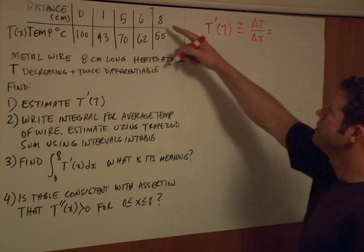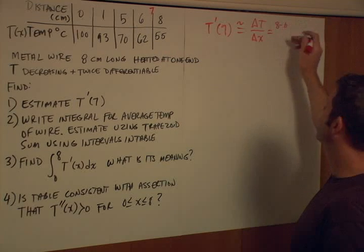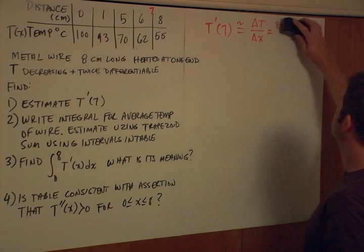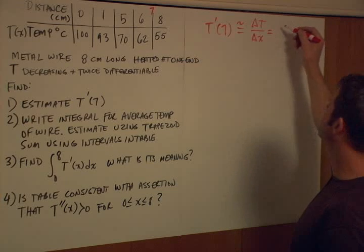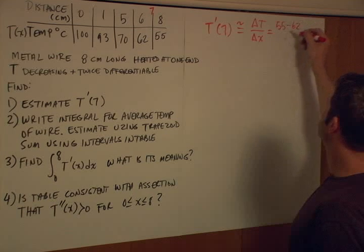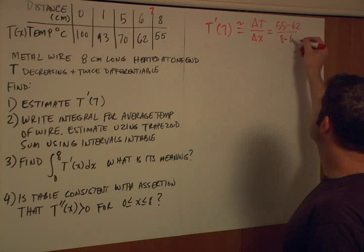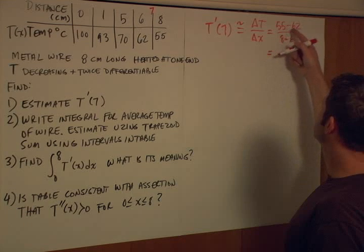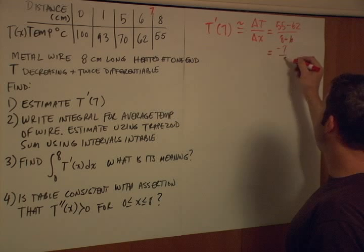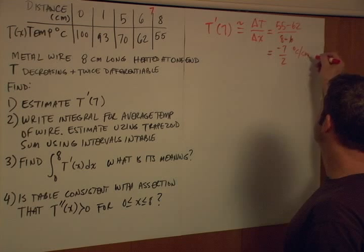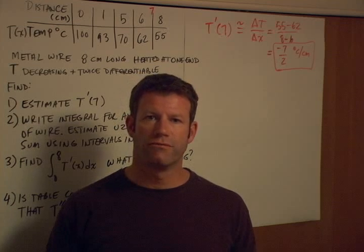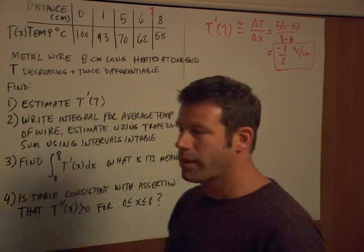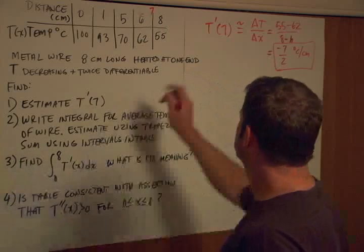So we're going to compute: (55 minus 62) divided by (8 minus 6), which gives us negative seven over two, and that's in degrees Celsius per centimeter. The part A's of these problems are always pretty straightforward — they want to invite you to get into the problem and get a little confidence. So that's part A.